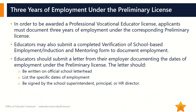In order to be awarded a professional vocational educator license, applicants must document three years of employment under the corresponding preliminary license. This employment must occur after the date that the preliminary license was issued. The licensure office keeps a record of all licenses issued and will confirm that the applicant holds the appropriate preliminary license. To document employment, educators should submit a completed copy of the licensure office's verification of school-based employment induction and mentoring form, or a letter on official school letterhead signed by the school superintendent, principal, or HR director. This letter should denote the dates of employment and the specific license under which the educator was employed.